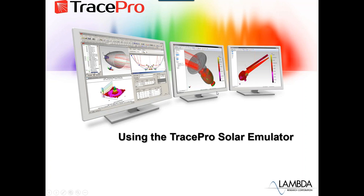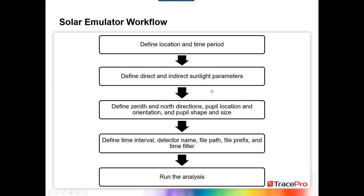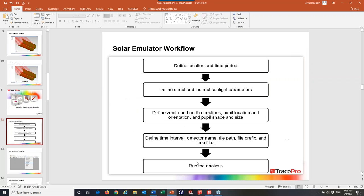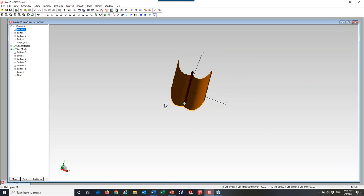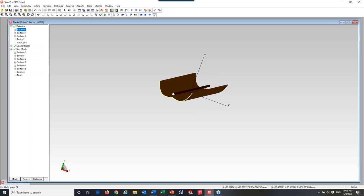Now let's talk about the solar emulator. The solar emulator is a tool that's been in TracePro for a number of years — one that not everybody knows is there. We have a webinar on it, and I'm probably going to do another webinar on just the solar emulator. When we set up the solar emulator, we already have a model we're working with, and we want to see how the system performs as we move the sun across the sky or change locations — modeling different parameters automatically without having to build each individual sun position.